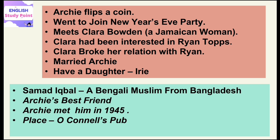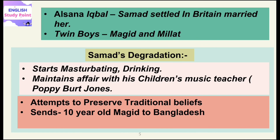We are then introduced to another family — that of Samad Iqbal, who is a Bengali Muslim from Bangladesh and Archie's best friend. Archie met him in the year 1945, when they both were soldiers and part of a tank crew in the final days of World War II. They continued their friendship and always used to meet at a place called O'Connell's pub. Samad, after settling in Britain, got married to Alsana, and Alsana gave birth to twin boys whose names are Magid and Millat.